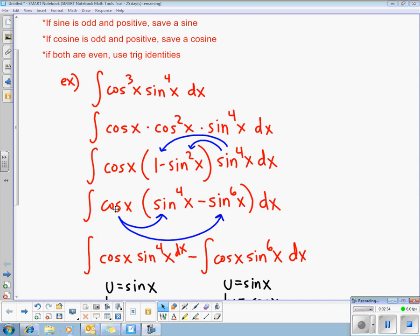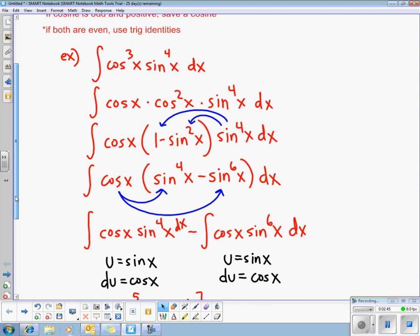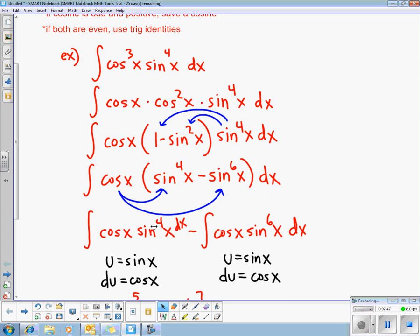So we were right here where we had the loaner cosine and we had changed all the other cosines into sines. Okay, so now if you distribute the cosine through to both of those parts I can break this into two separate integrals: sine to the fourth times cosine and sine to the sixth times cosine.